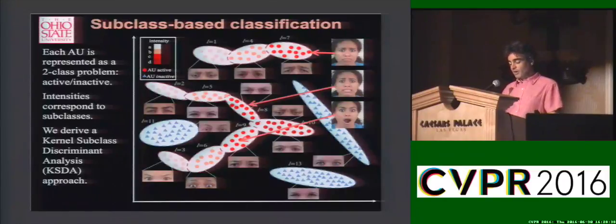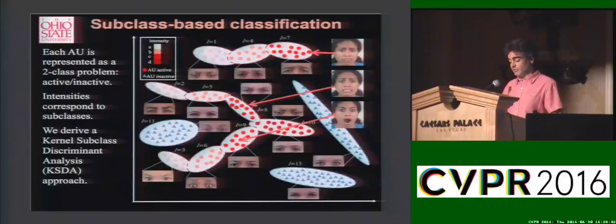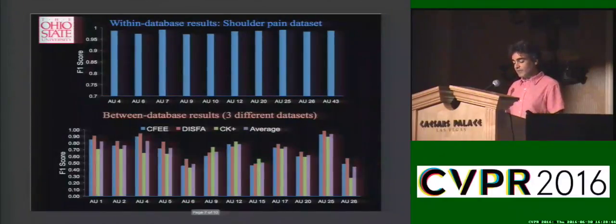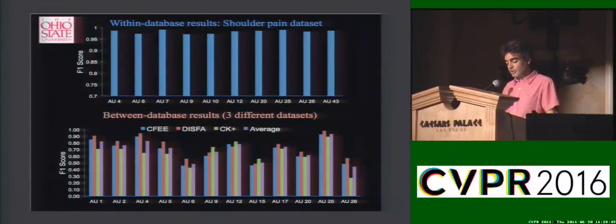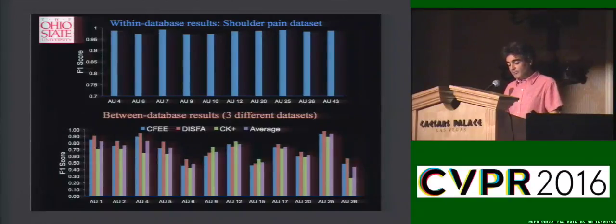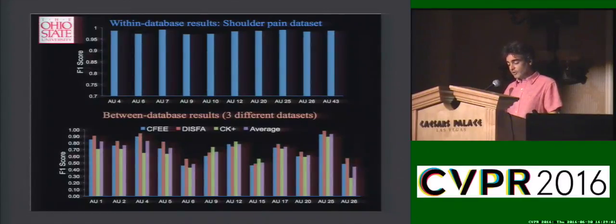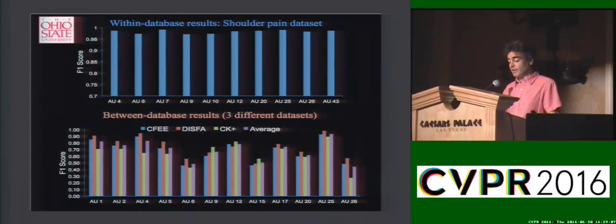This makes classification of AUs and their intensities robust to the image variations mentioned earlier. This method works so well that the cross-validation results within a database collected in lab conditions are almost perfect. As you can see in the top plot here, the F1 scores are almost at one for a large number of tested AUs. Even when training on two databases and testing on a completely different database, the results are very accurate, as shown in the bottom plot.